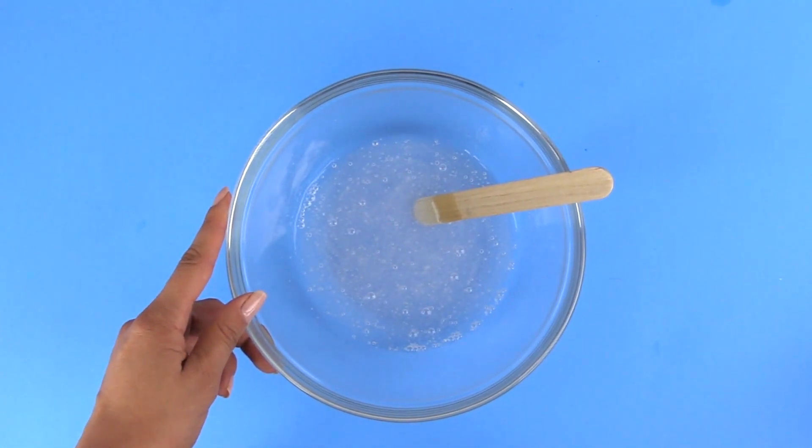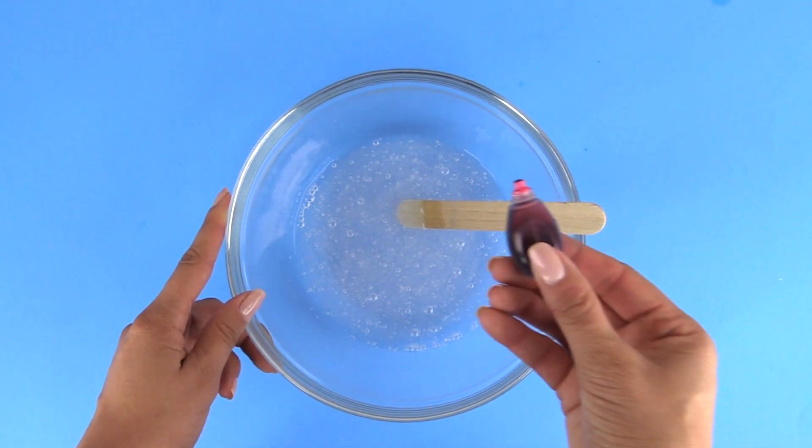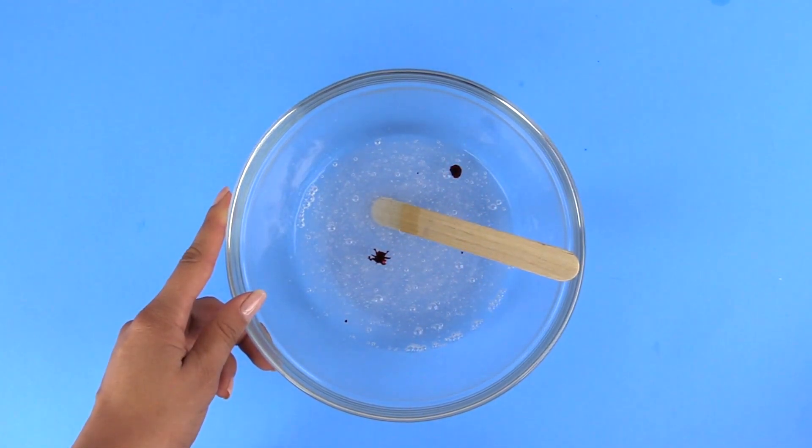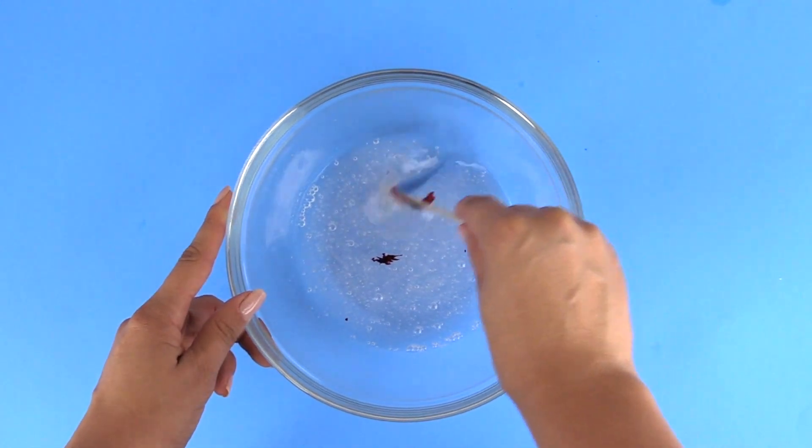We gave that a good little stir. Now we could add in some food coloring, and I'm going to go for pink. Add a few little drops. Now let's stir this up again.